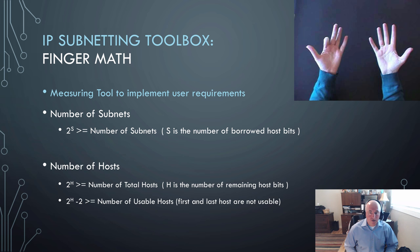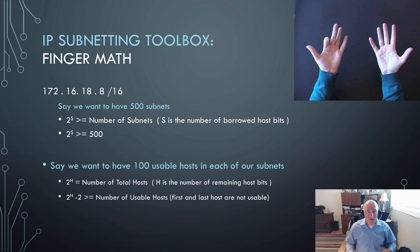And then number of hosts, we have total hosts and then usable hosts. Remember we can't use the first or the last host because the first host is a network ID and the last host is a broadcast address. So that's why the formula has a minus two. I often just do the 2^h first and then minus the two.